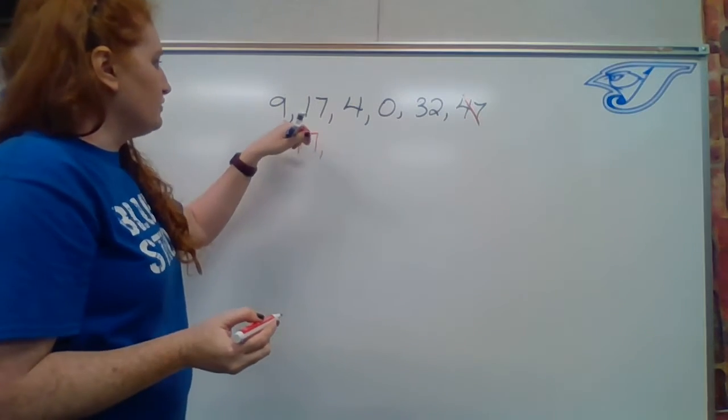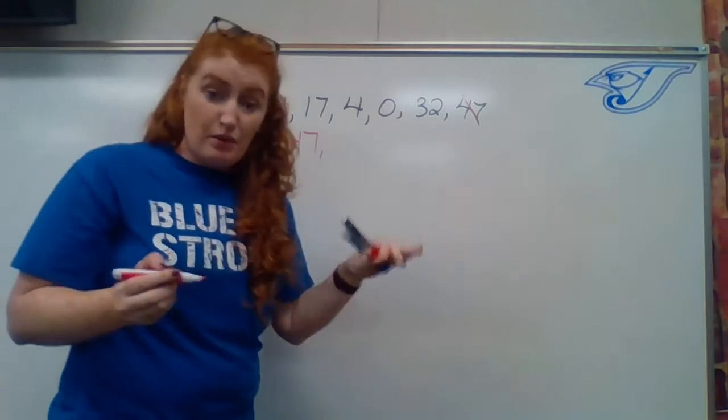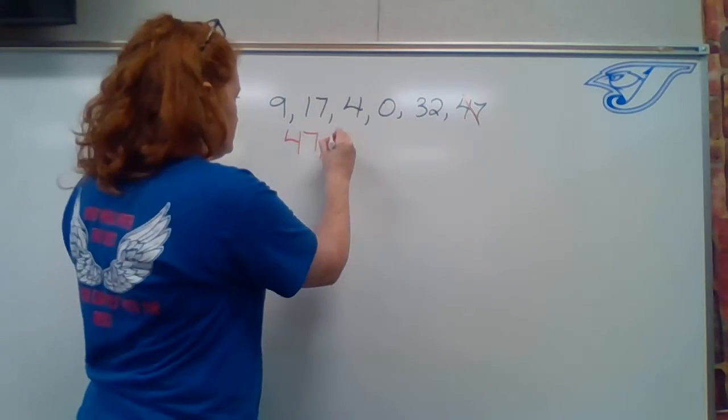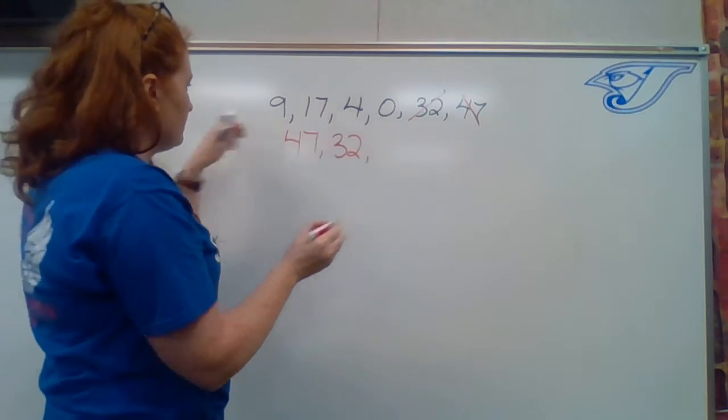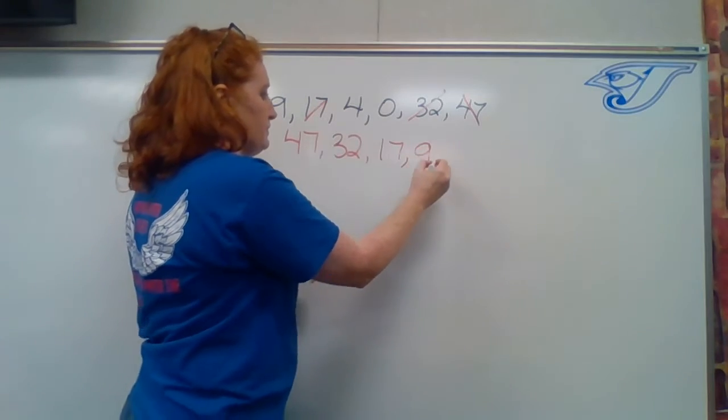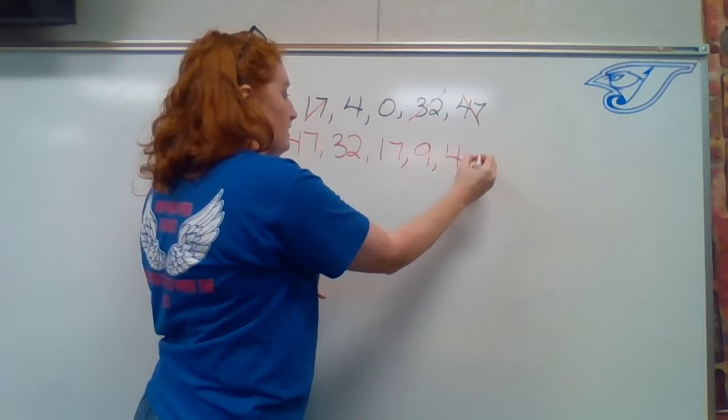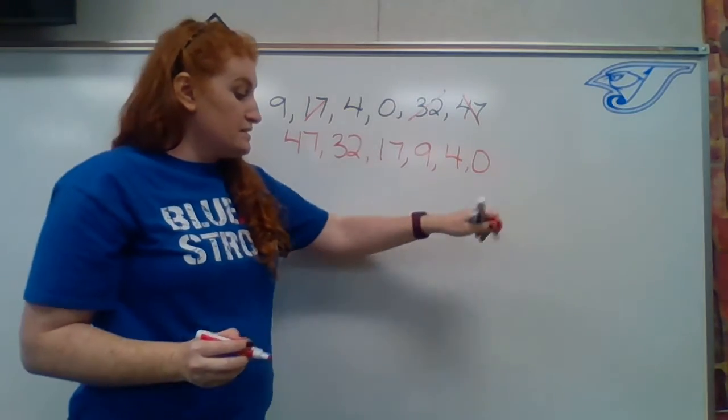Then we're looking through and looking for the number that is smaller than 47, but it isn't the smallest. So as we go, 32, and then we go through again, 17, 9, 4, and 0. So now we have our numbers listed from greatest to smallest.